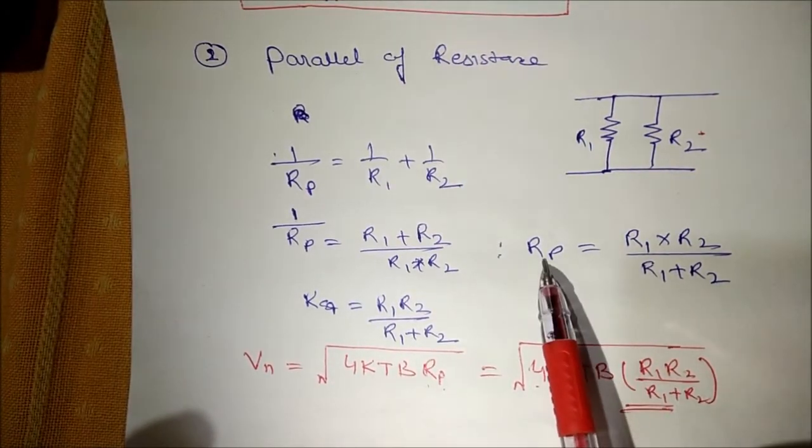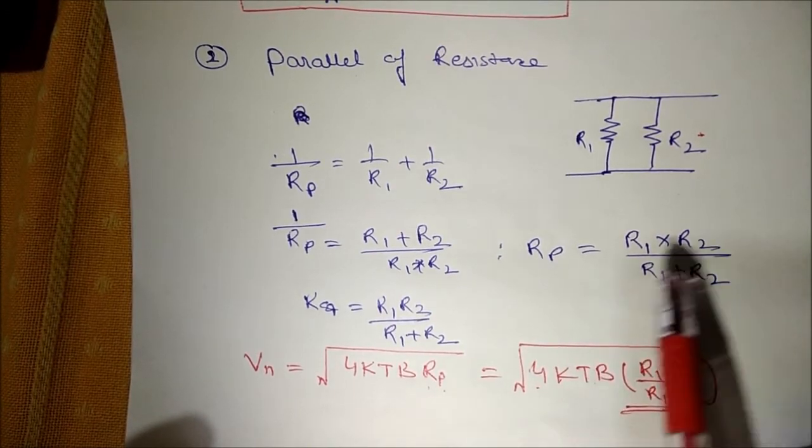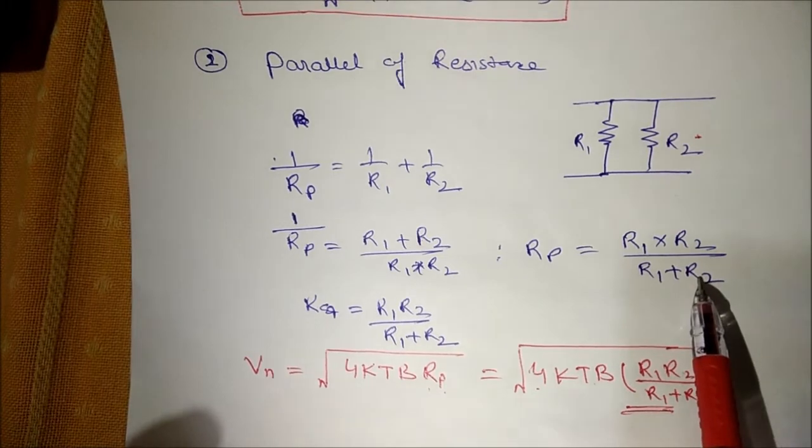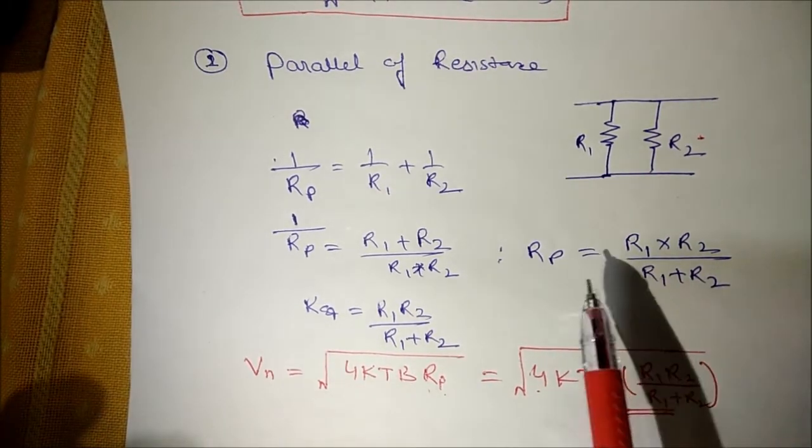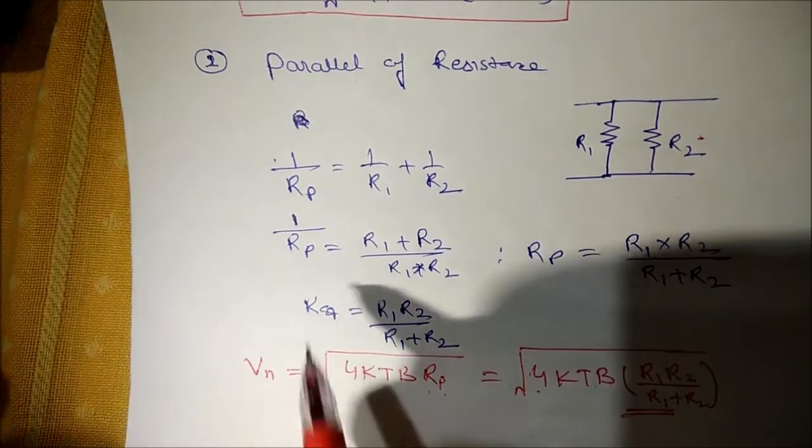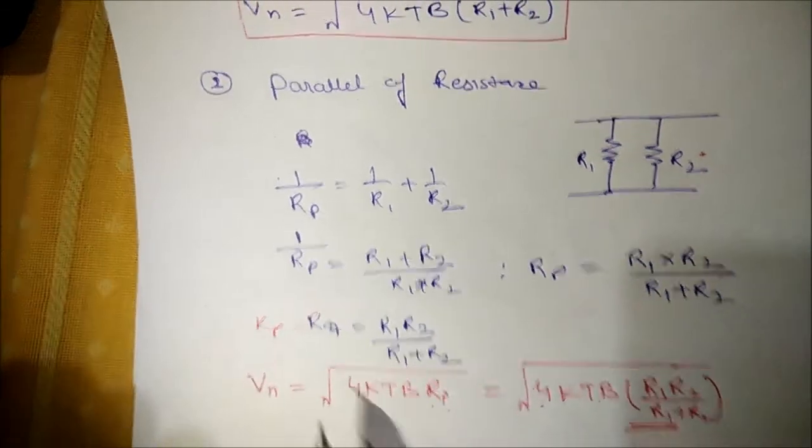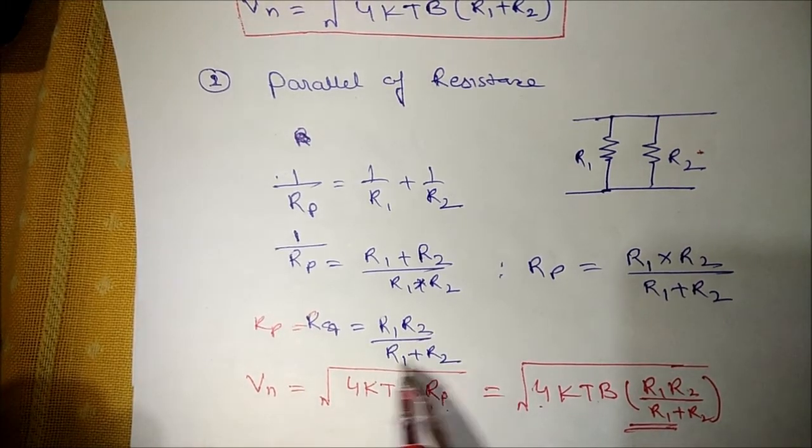Here Rp represents parallel combination of resistances is R1 into R2 upon R1 plus R2. We are replacing R equivalent with respect to Rp or we can just write Rp equals to R equivalent equals to R1 R2 upon R1 plus R2.